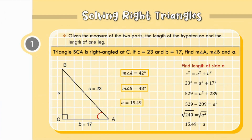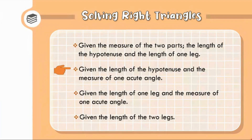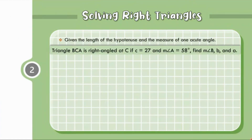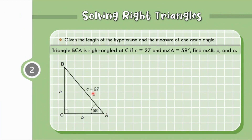We are done with the first given. Let us move on with the second given: given the length of the hypotenuse and the measure of one acute angle. Let triangle BCA be right-angled at C. If C equals 27 and measure of angle A equals 58 degrees, find measure of angle B, length of side B, and length of side A.